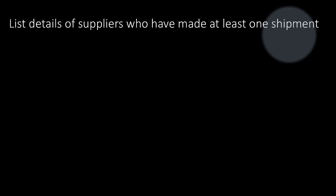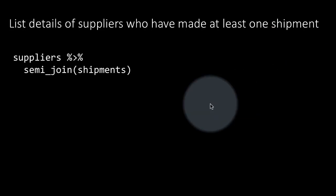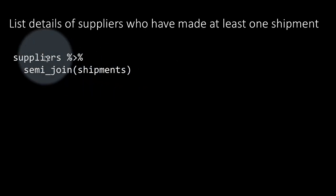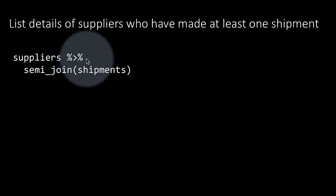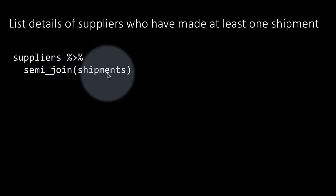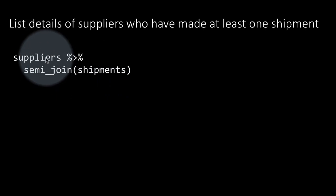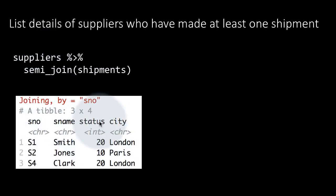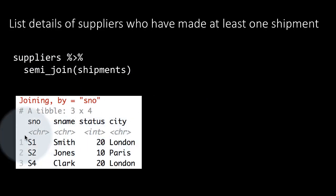Let's go back to our supplier-parts-projects example and list the details of suppliers who have made at least one shipment. All we want is to look at the supplier table and retain only those rows for which the supplier number is in the shipment table. It's easily done by doing suppliers semi-join shipments — only retain those suppliers who have a matching supplier number in the shipment table. No information from the shipment table will be in the report; the only report will be data about suppliers: supplier number, supplier name, status, city.